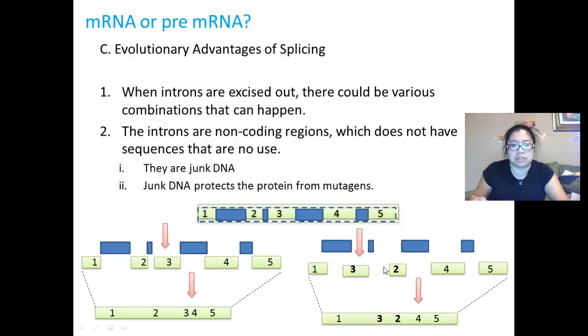So those are the two evolutionary advantages of splicing. One, you can have different combinations. Two, it is like a bodyguard protecting your important parts, which are your coding regions, the exons, to give you a final mRNA sequence that could be made into a protein.